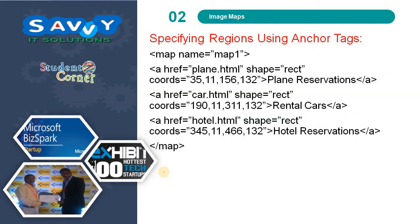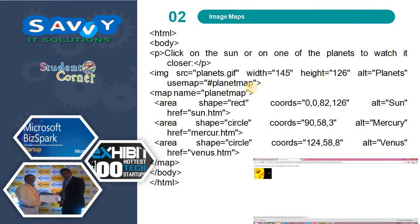When specifying regions using the anchor tag, we use the map tag and specify the map name, call the HTML page, and select the shape and give the coordinates — left corner and right bottom. For rectangle and circle, we need to take starting and ending points as coordinates, as well as the radius for circle. This example will be explained more clearly during the practical session, because using a single image we can call multiple HTML pages.